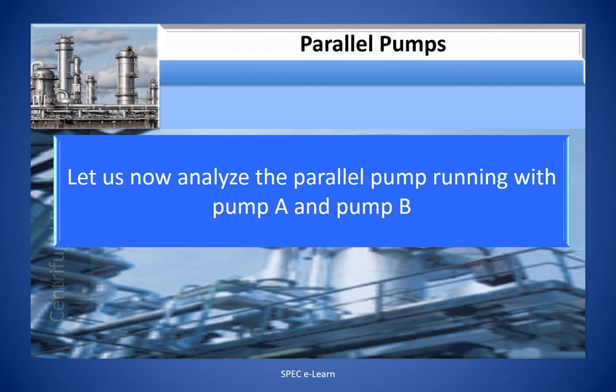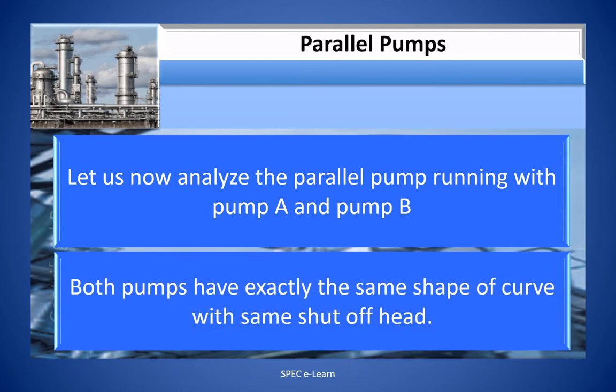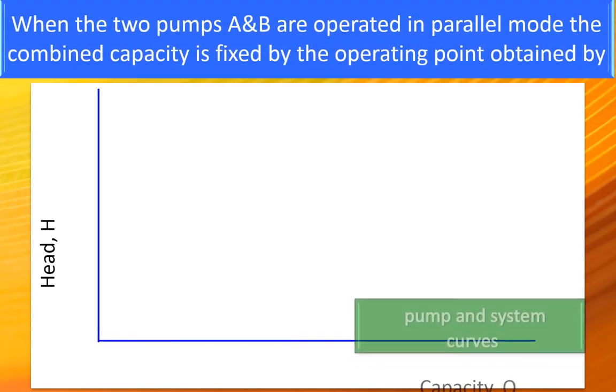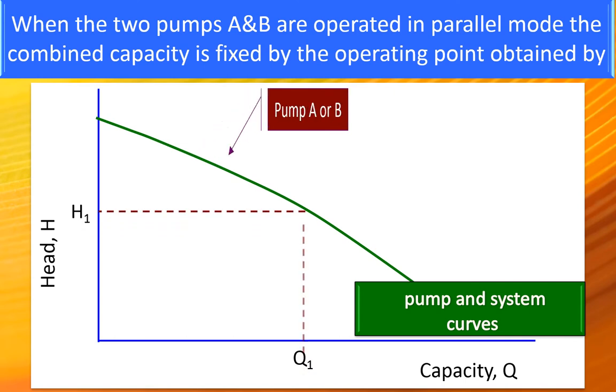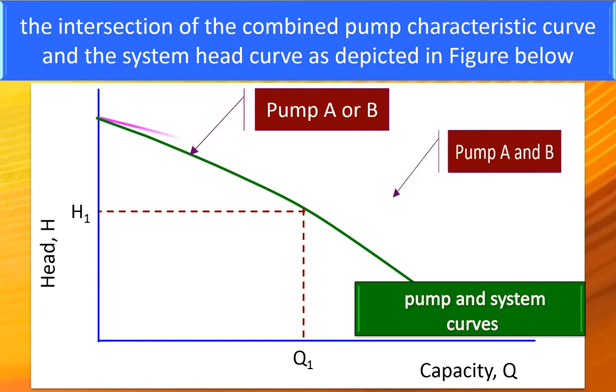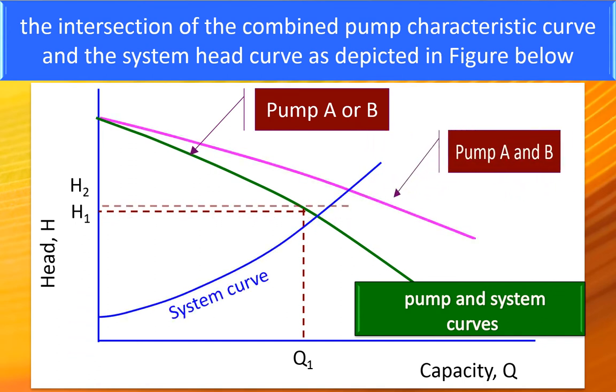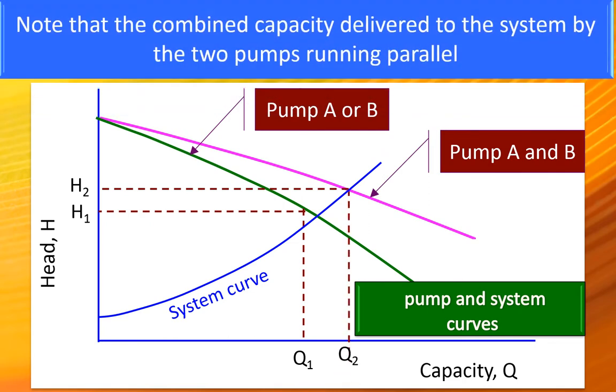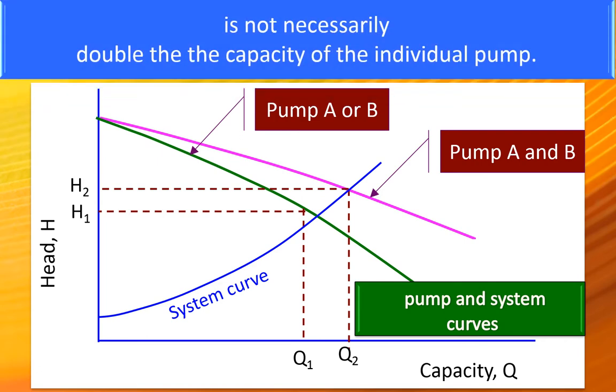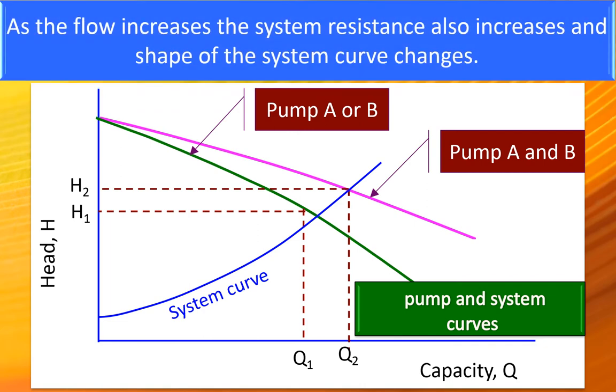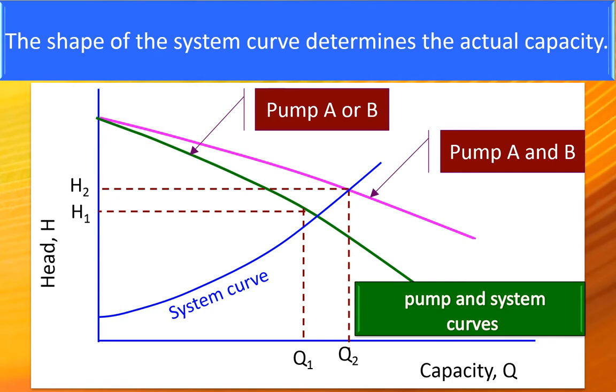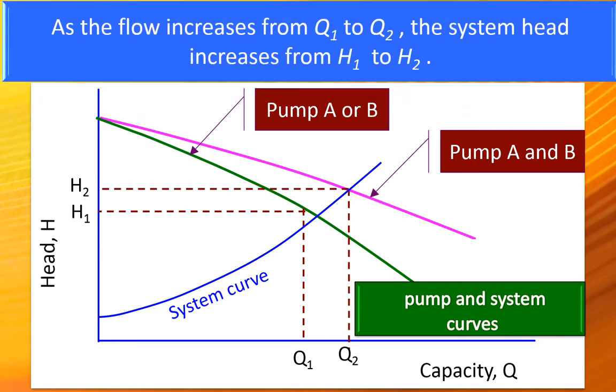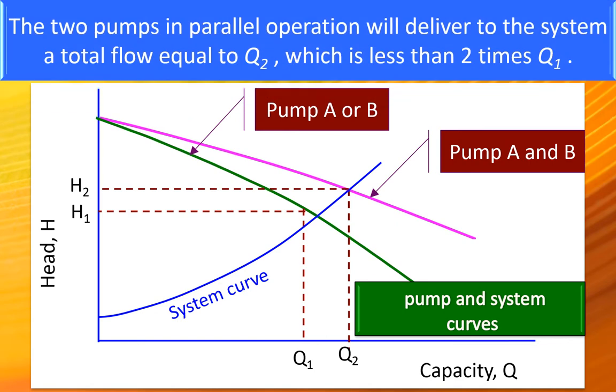Let us now analyze the parallel pump running with pump A and pump B. Both pumps have exactly the same shape of curve with same shutoff head. When the two pumps A and B are operated in parallel mode, the combined capacity Q2 is fixed by the operating point obtained by the intersection of the combined pump characteristic curve and the system head curve as depicted in the figure below. Note that the combined capacity delivered to the system by the two pumps running parallel is not necessarily double the capacity of the individual pump. As the flow increases, the system resistance also increases and the shape of the system curve changes. The shape of the system curve determines the actual capacity. As the flow increases from Q1 to Q2, the system head increases from H1 to H2. The two pumps in parallel operation will deliver to the system a total flow equal to Q2 which is less than 2 times Q1.